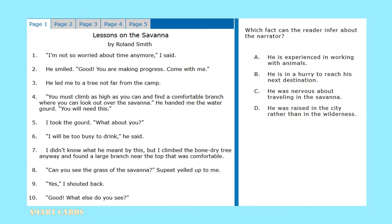Which fact can the reader infer about the narrator? He is experienced in working with animals? He is in a hurry to reach his next destination? He was nervous about traveling in the Savannah? Or he was raised in the city rather than in the wilderness? Given the narrator's previous comment about watching mimes in Central Park in New York City, we can conclude that he was probably raised in the city rather than in the wilderness. This would give us answer option D.